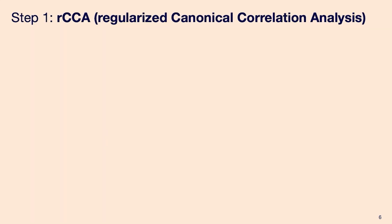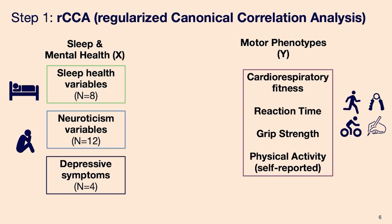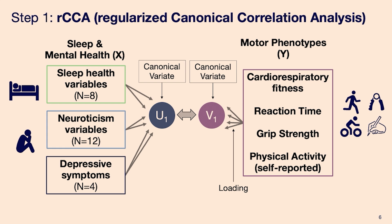For the first step, we used regularized canonical correlation analysis. The idea is relatively simple: instead of correlating individual items like in a normal Pearson correlation, we are correlating two sets of variables by finding their linear combinations, called canonical variates. We then find the canonical variates that most highly correlate with each other — and like in a PCA, we can obtain different canonical variates.